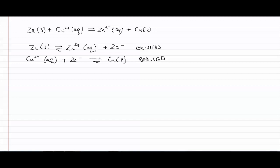So we see zinc losing two electrons, and the loss of electrons is oxidation. We see copper gaining two electrons. So copper becomes reduced.